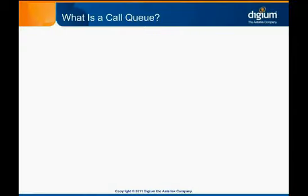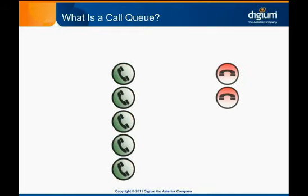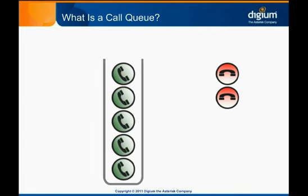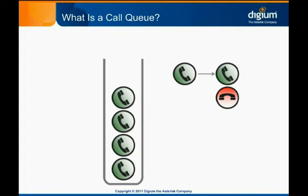So what is a call queue? It's common for an organization to have more inbound callers than people available to answer. A call queue is a sort of holding pen that lets the PBX automatically distribute calls in an organized fashion. The system connects the call to a person when one becomes available. You have likely been in a call queue and heard phrases like, 'Please stay on the line and your call will be answered by the next available representative.' Most call queues, including those in Asterisk, can provide services like hold music or estimated wait time to the caller.